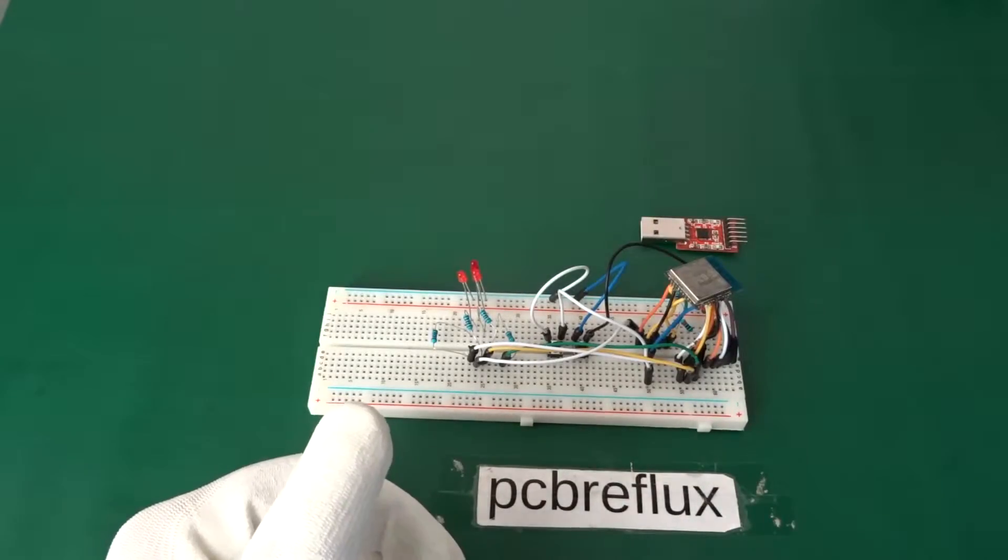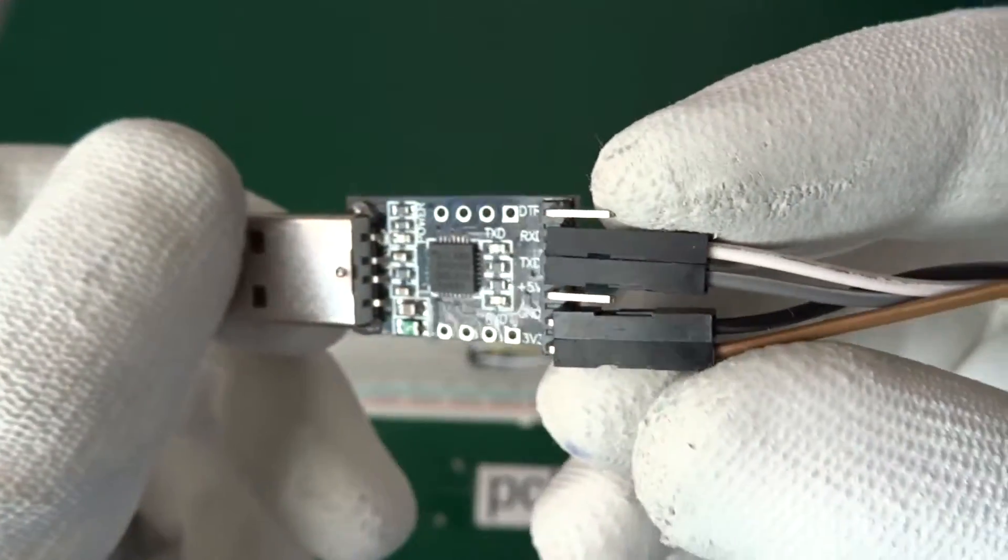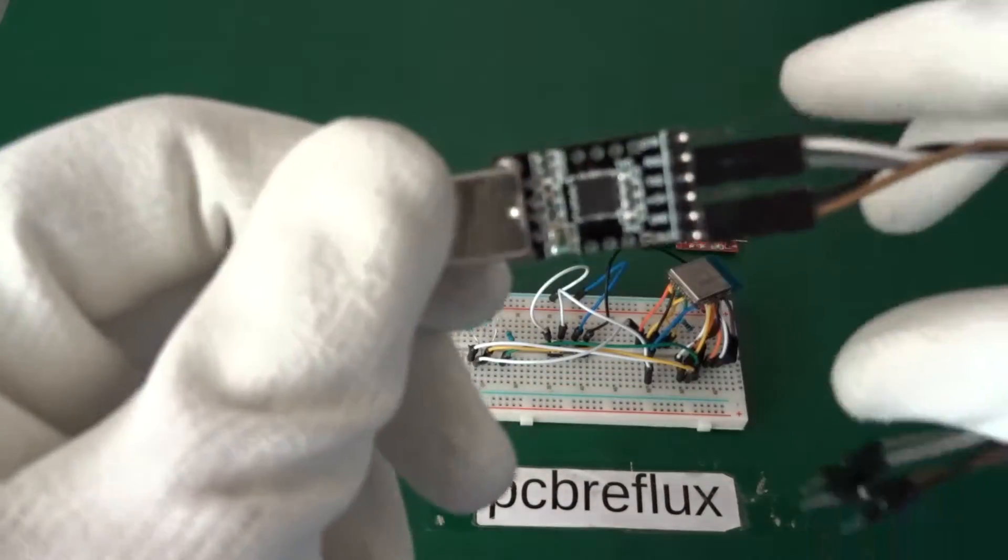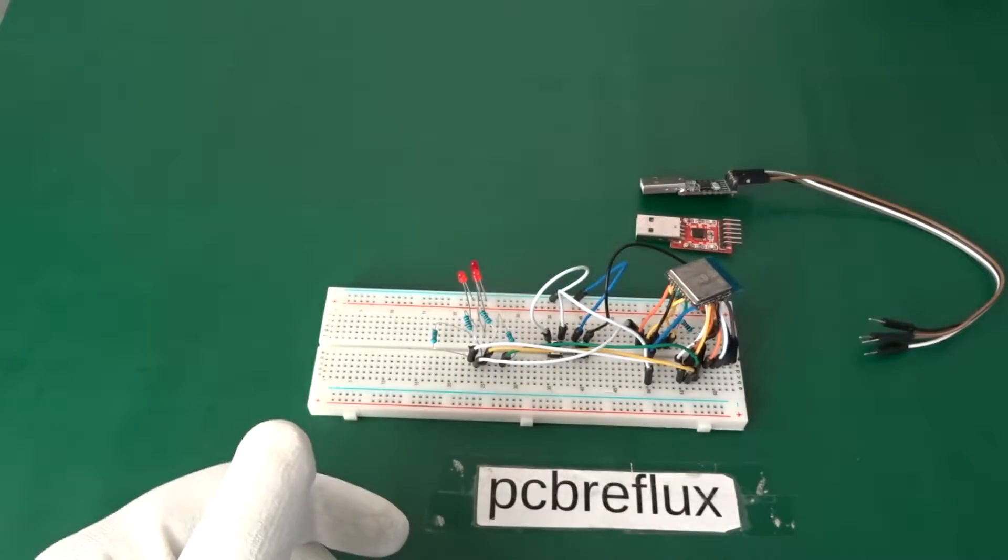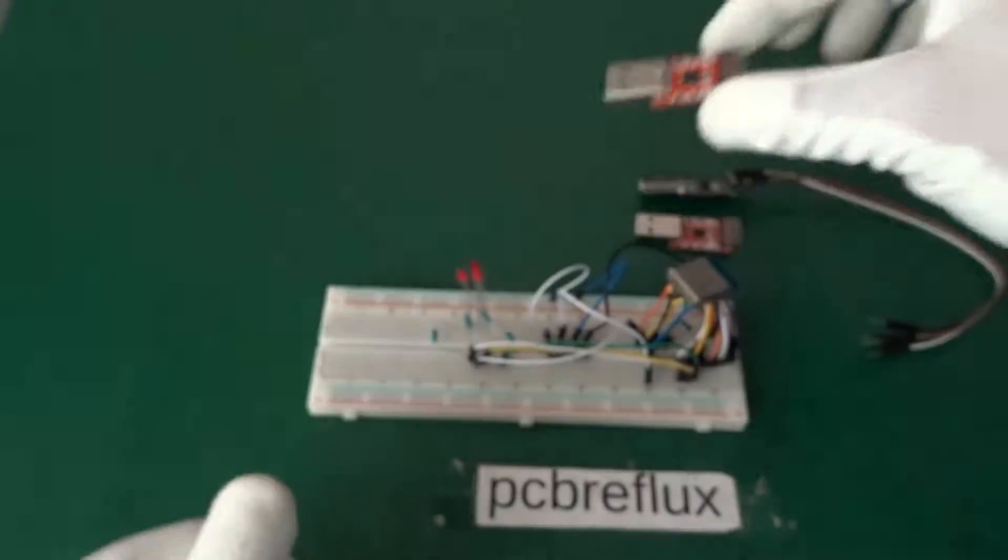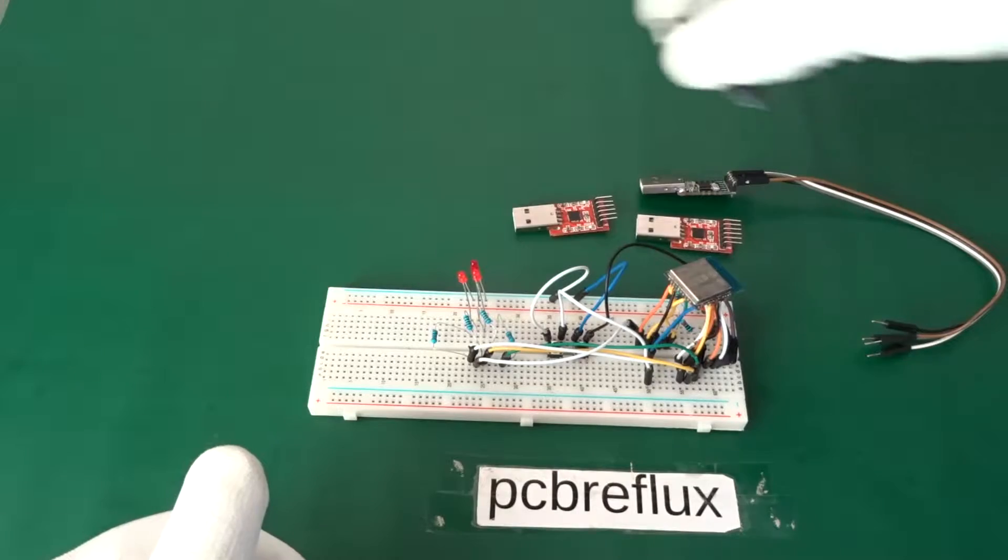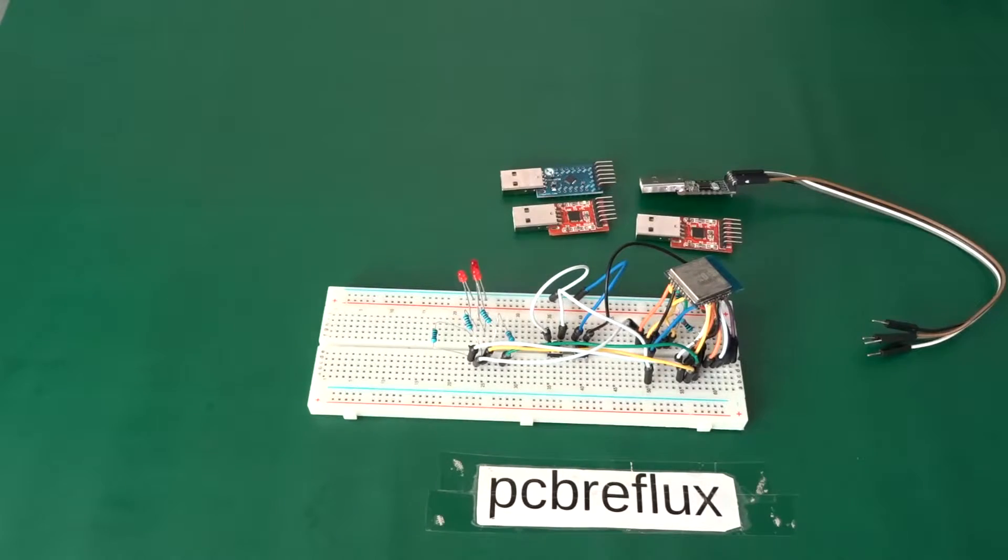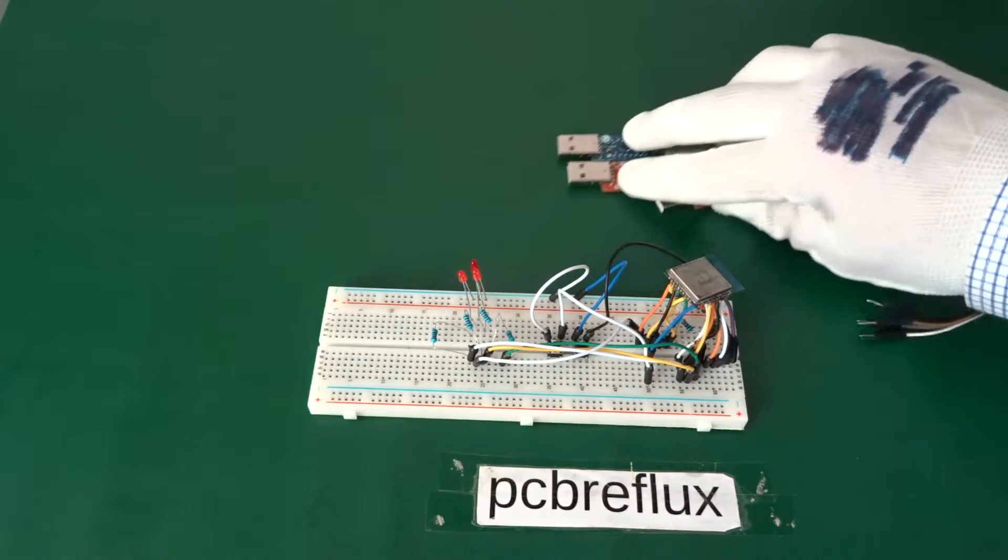You can use the CP2102 with an external voltage regulator, or you use the CP2104 that provides enough current for running my ESP32, so maybe you give the CP2104 a try or you use the FTDI adapter.